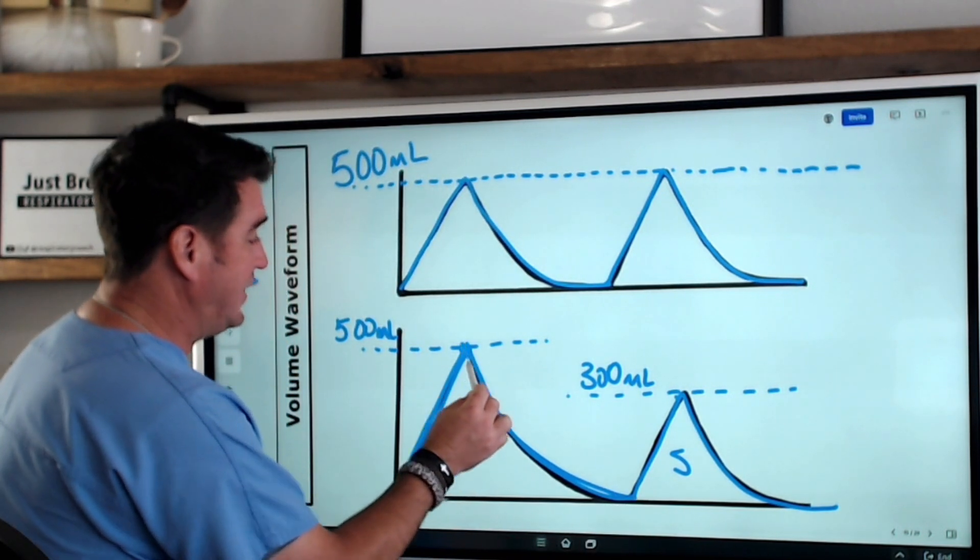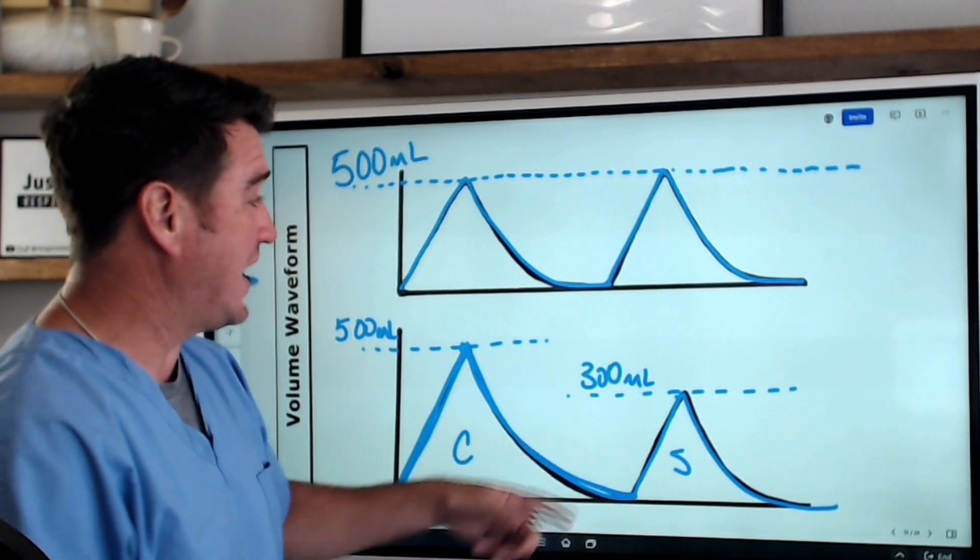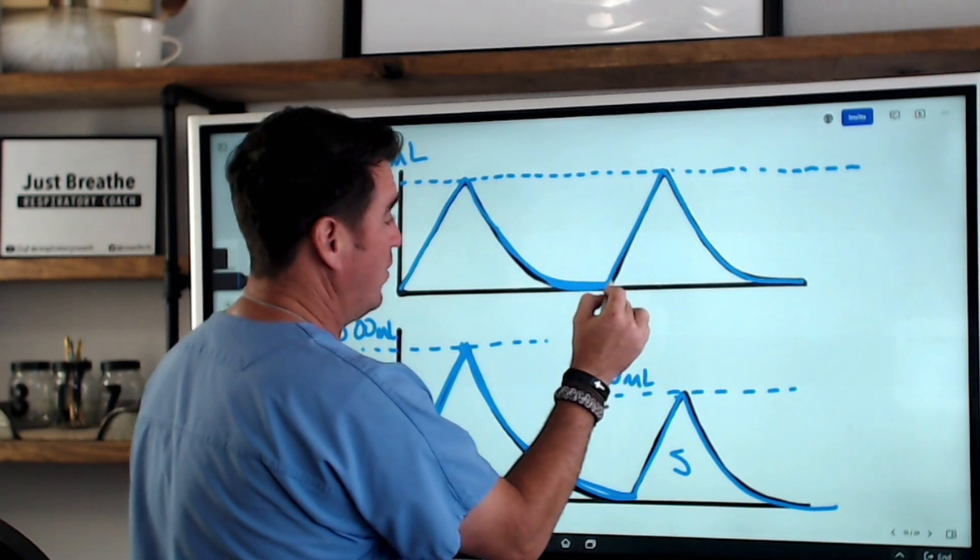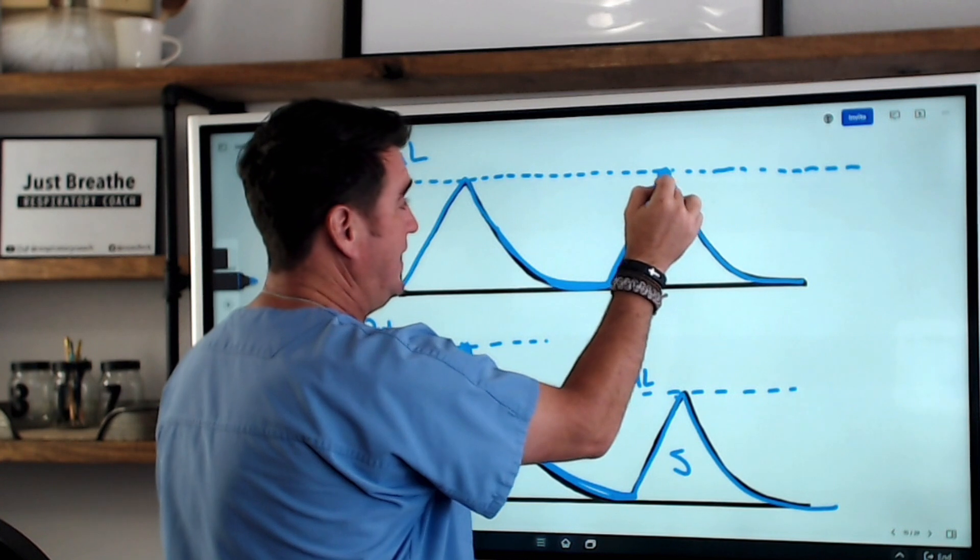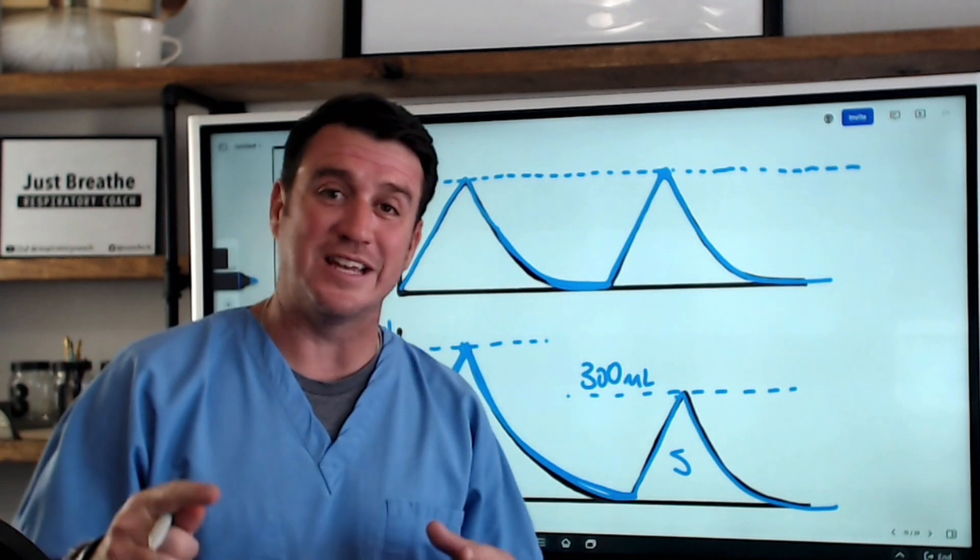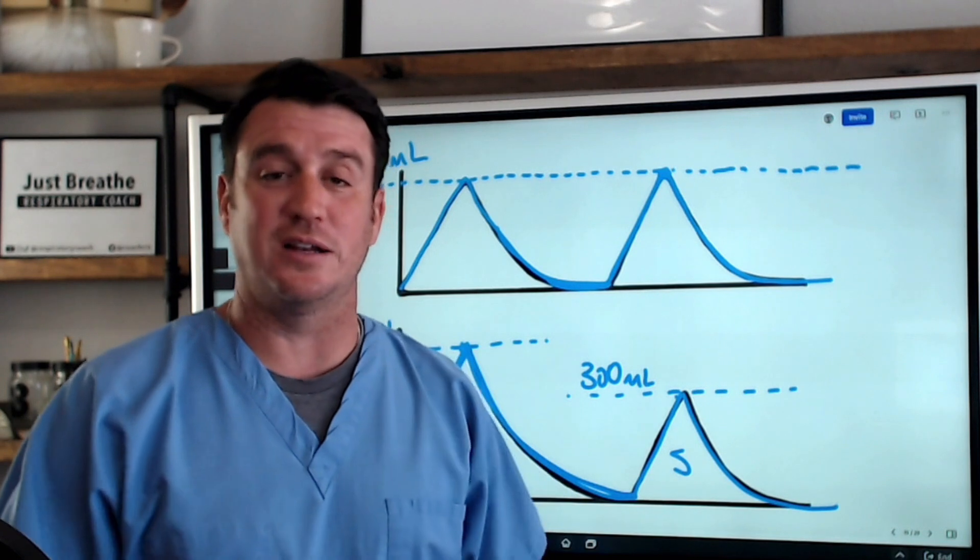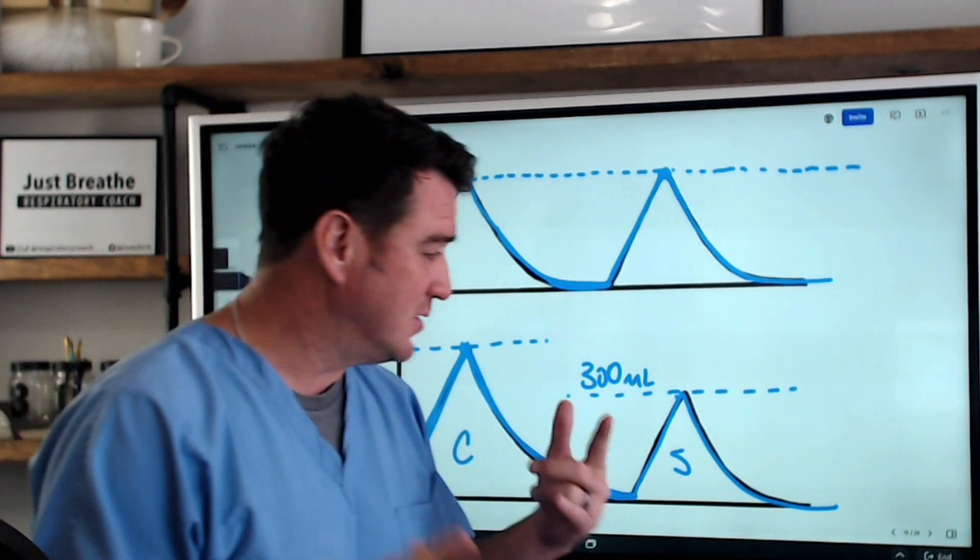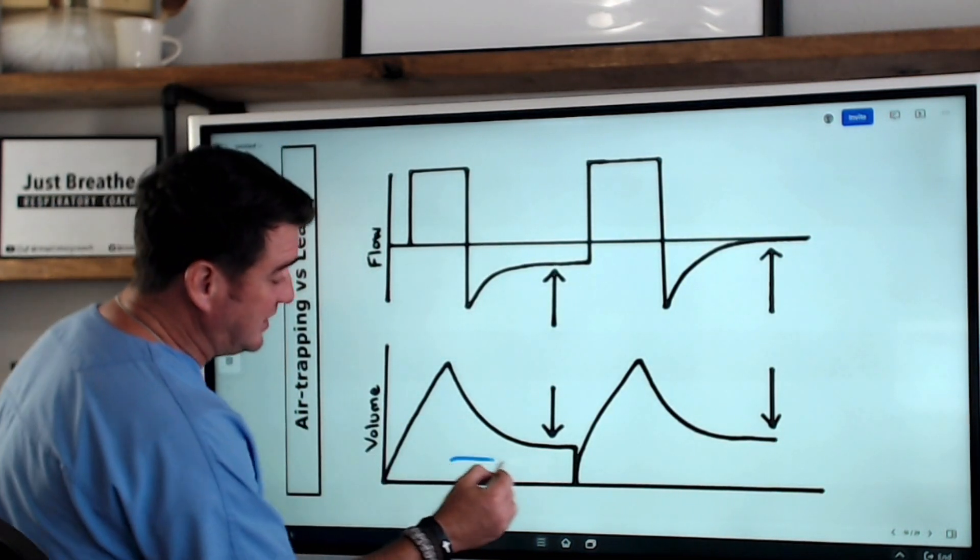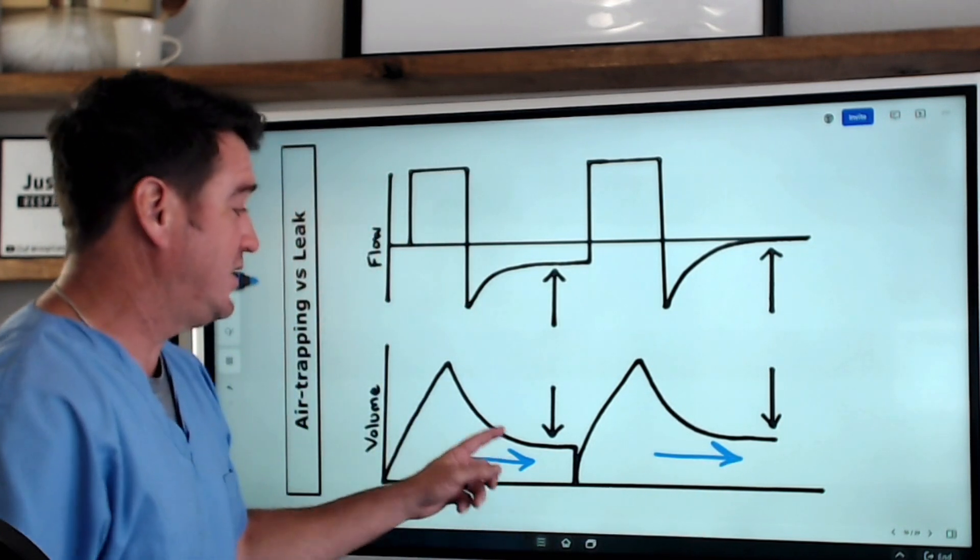However much goes in, this should return to baseline. So when I say return to baseline, I mean all the way back down here to zero, which means everything that went in now came out. That's what we mean when we say return to baseline. Now we talked about returning to baseline with flow and here we are talking about it again with volume because when the volume waveform does not return to baseline, notice these two situations right here.